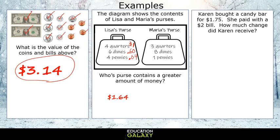Now let's check out Maria's purse. Maria has three quarters — that's seventy-five cents — plus eight dimes. Dimes are worth ten cents each, so starting at seventy-five: eighty-five, ninety-five, a dollar five, a dollar fifteen, a dollar twenty-five, a dollar thirty-five, a dollar forty-five, a dollar fifty-five. And then one penny is one cent, so that makes it a dollar fifty-six. Well, Lisa has more money, so she would be the answer.